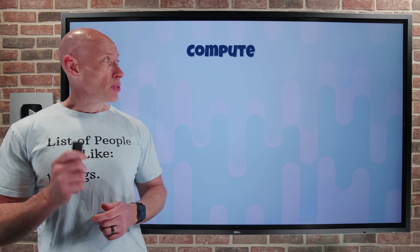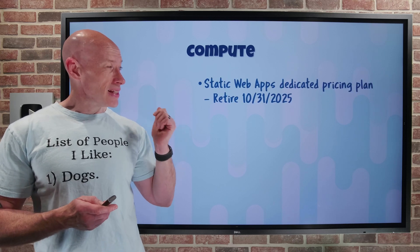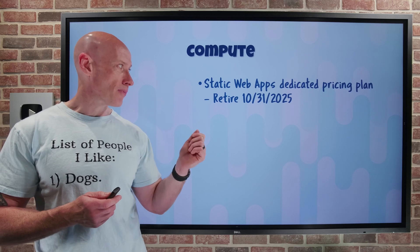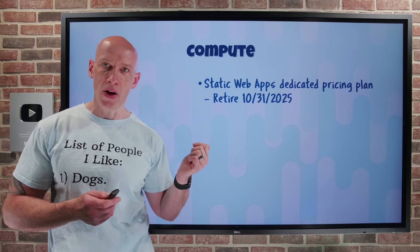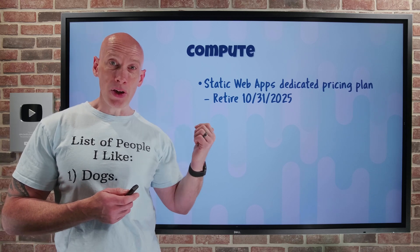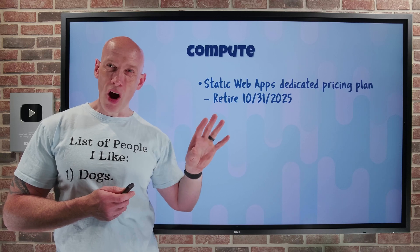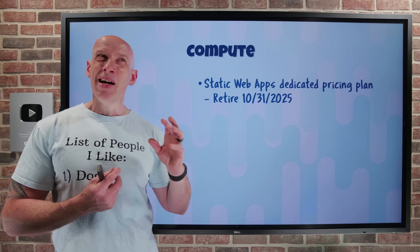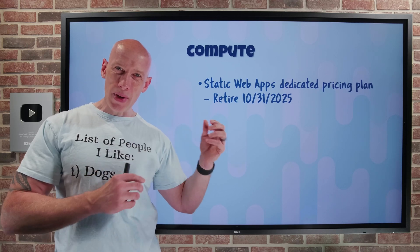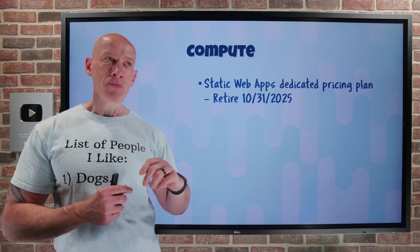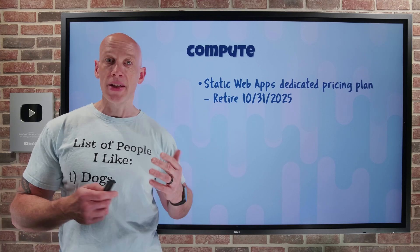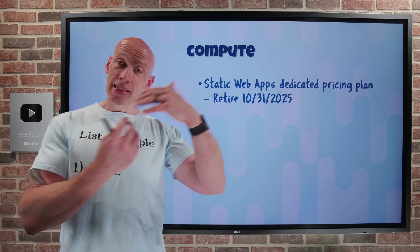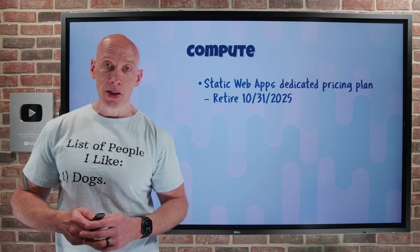On to what's new on the compute side. The Static Web Apps Dedicated Pricing Plan is being retired at end of October 2025. This was in preview — it had more staging environments, a larger app size, and more custom domains, but it lacked the globally distributed static content capability. So instead, they're focusing on the standard pricing plan. Migrate from dedicated to standard before that time.